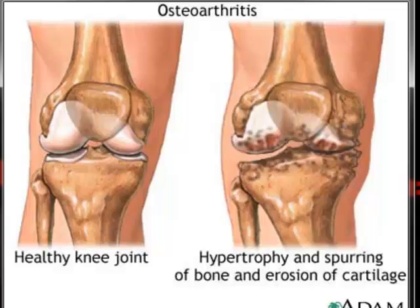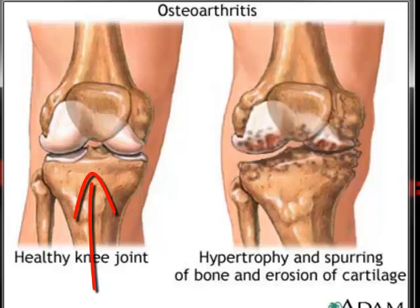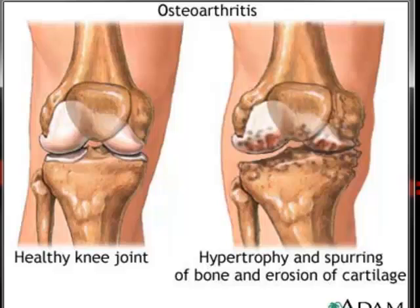Cartilage also acts as a shock absorber. Looking at the healthy knee joint diagram, imagine you're playing basketball or volleyball and you jump up to grab a rebound or spike a ball. When you land on your feet, all the force of your body weight and gravity slamming into the bottom of your feet is transferred up through your entire body. The cartilage within our joints — as you can see here in the knee — will act as a cushion to absorb some of that force, helping with the wear and tear of the knee and making jumping more comfortable. Let's watch a video clip from Human Body: Pushing the Limits to see how important cartilage is to parkour athletes doing jumps and flips.